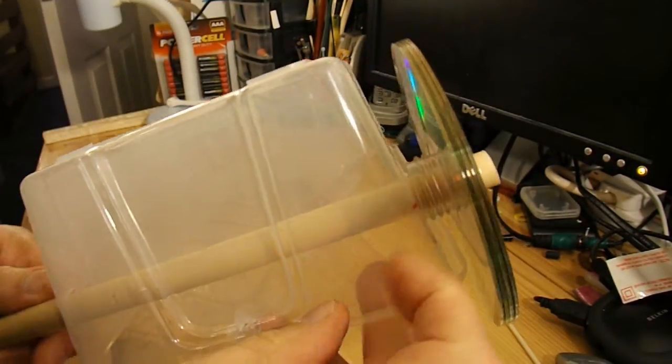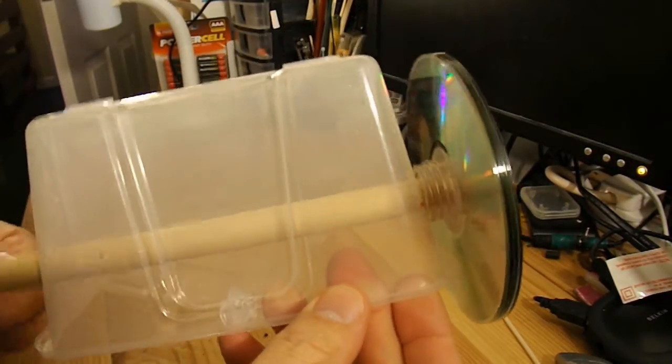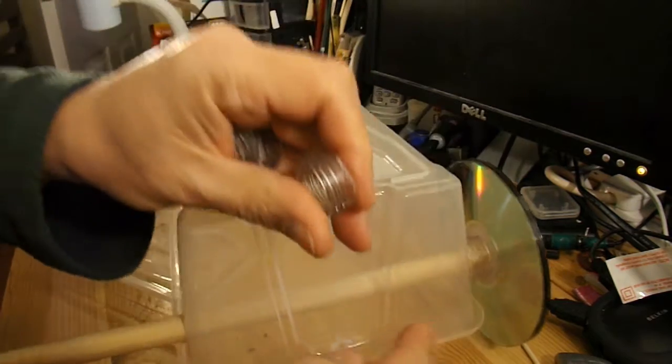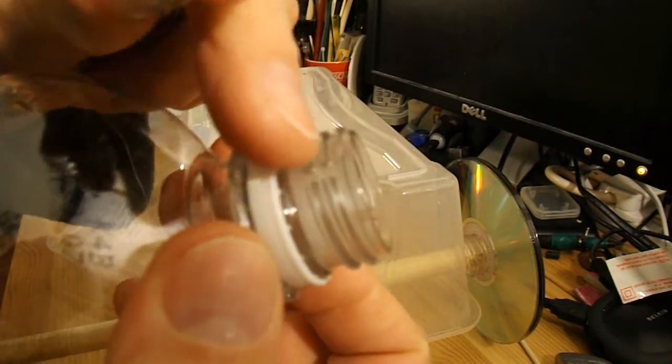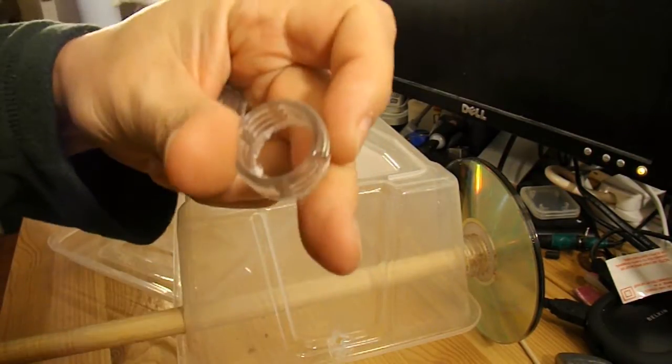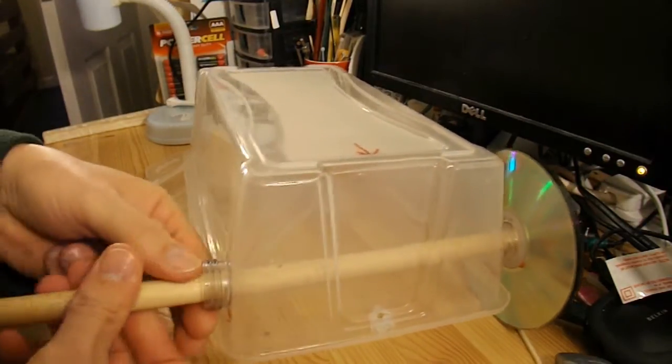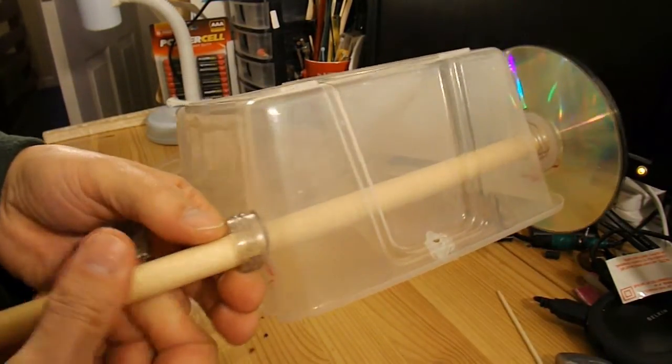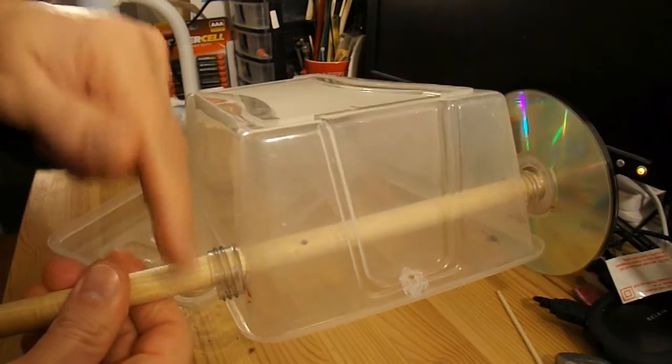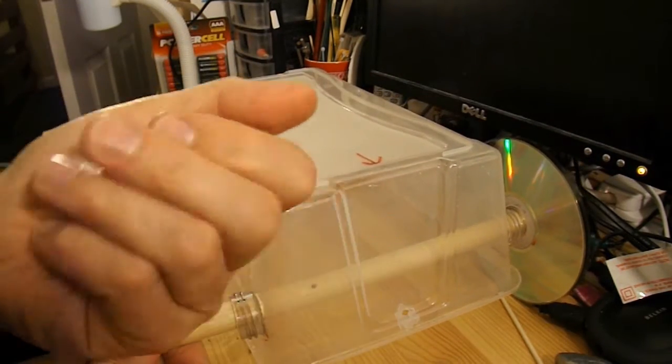For spacers to stop the CDs rubbing against the side of the lid, I'm using the threaded part of my pop bottles. They just happen to be a good size to sit there and space the CDs away from the edge. So that's convenient because I've already got four of them cut out.